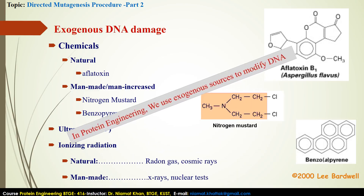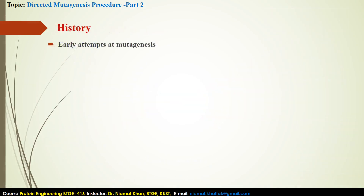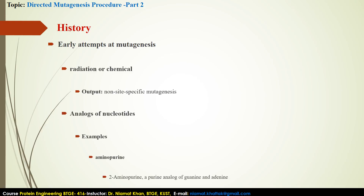In protein engineering, we also use some exogenous sources to modify DNA in order to achieve protein with new desired properties. Currently, people use exogenous sources such as radiation or chemicals to modify DNA. However, it is noted that these mutations are non-specific and may be non-reproducible. Some people used nucleotide analogs such as aminopurine to modify DNA.